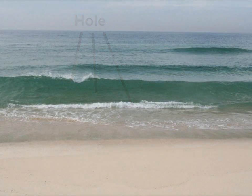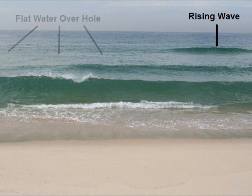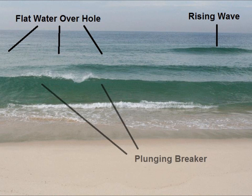This last picture was taken under the ideal conditions I spoke of earlier, which resulted in calm, consistent wave patterns. First note the pre-break wave rising up on the right side of the picture. Then note the flat water over the deeper section of the hole and the plunging breaker right up on shore. If waves are behaving in this manner, then you are looking at a hole. It may appear subtle at first, but once you know what you are looking at, they become easy to spot.